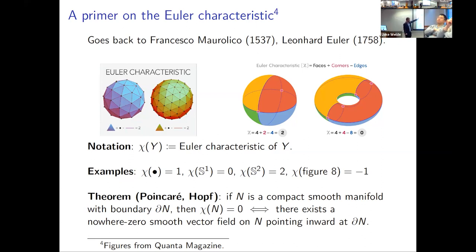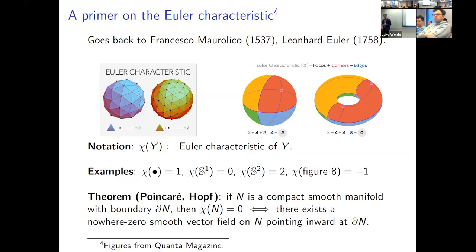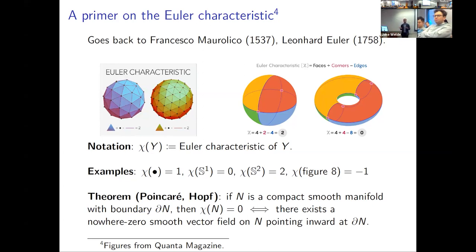For this talk, what you really need to know is this characterization of Euler characteristic: if you have a compact smooth manifold with boundary, then it has zero Euler characteristic if and only if you can find a smooth vector field on the manifold that points inward at the boundary and is zero nowhere. If you can find such a vector field, the manifold has zero Euler characteristic; and if it has zero Euler characteristic, you can find such a vector field.